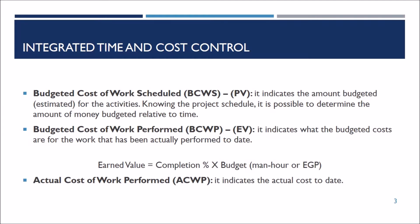Earned value, or budgeted cost of work performed, indicates what the budgeted costs are for the actual work performed to date. To calculate the earned value, simply multiply the percentage of completion by the originally allocated budget. Finally, the actual cost of work performed indicates the actual cost to date.